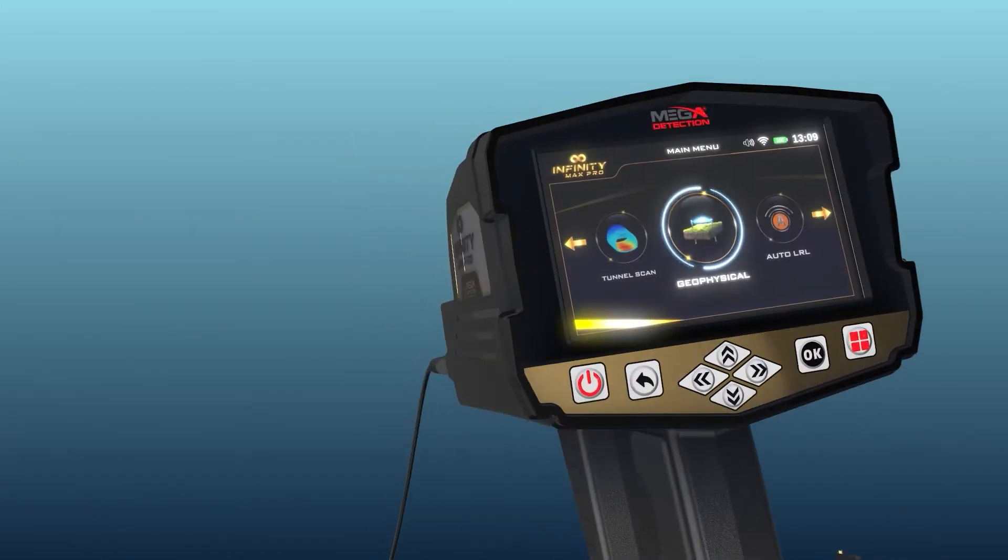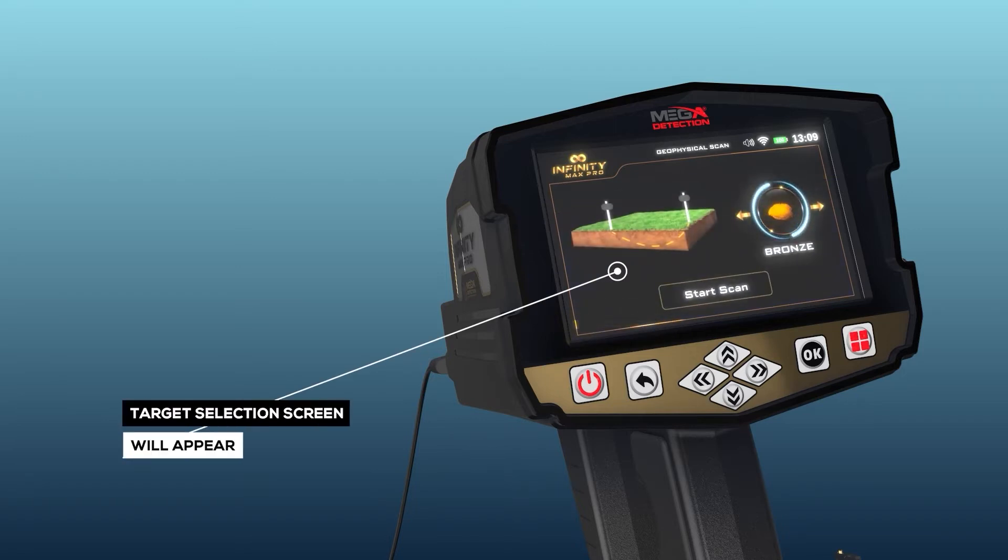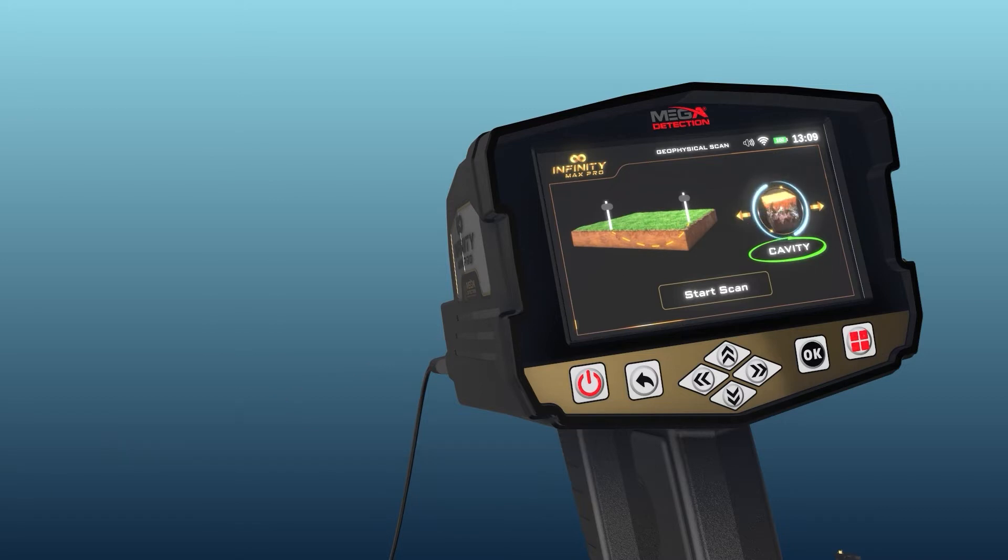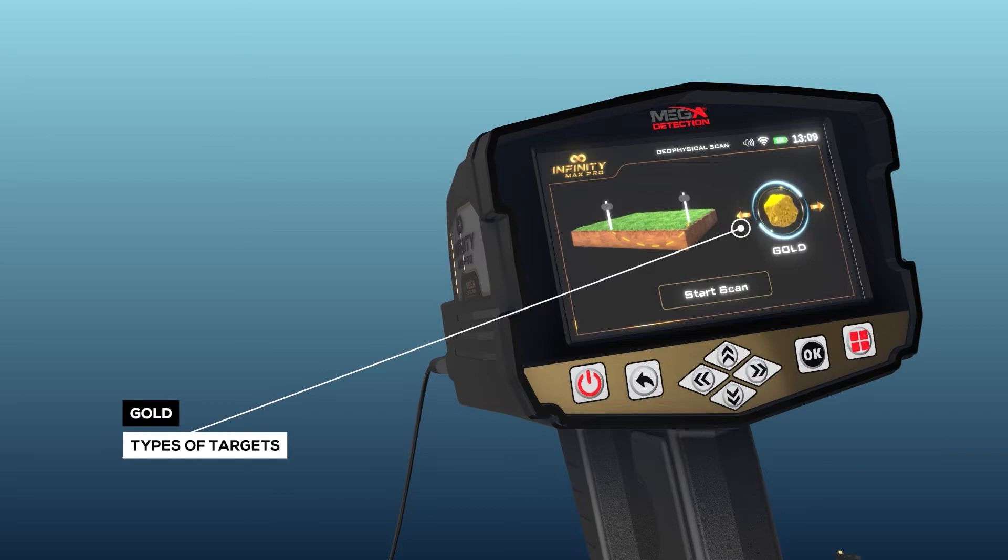After selecting the system, the target selection screen will appear. Target type: The type of target to be searched is selected from a list of targets that include gold, bronze, silver, water, iron, cavity, and copper.